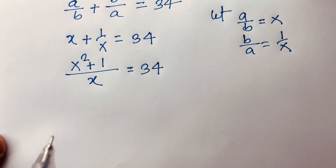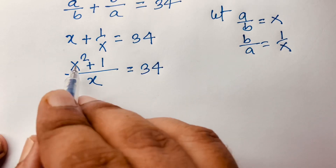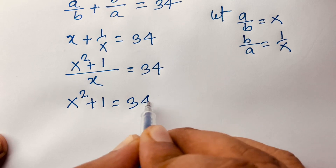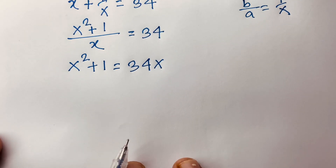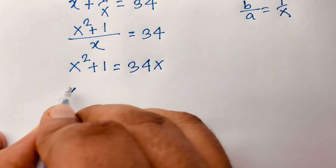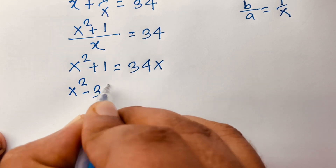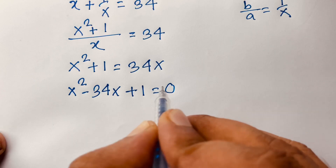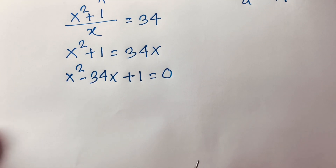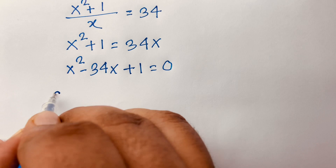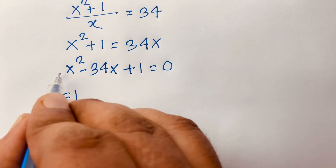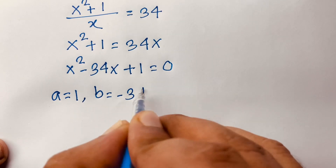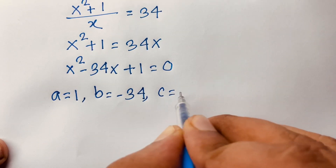If I multiply both sides by X, I can say it will be X squared plus 1 is equal to 34X. Then this equation becomes X squared minus 34X plus 1 is equal to 0. It is a quadratic equation, so A is equal to 1, B is equal to minus 34, and C is equal to 1.